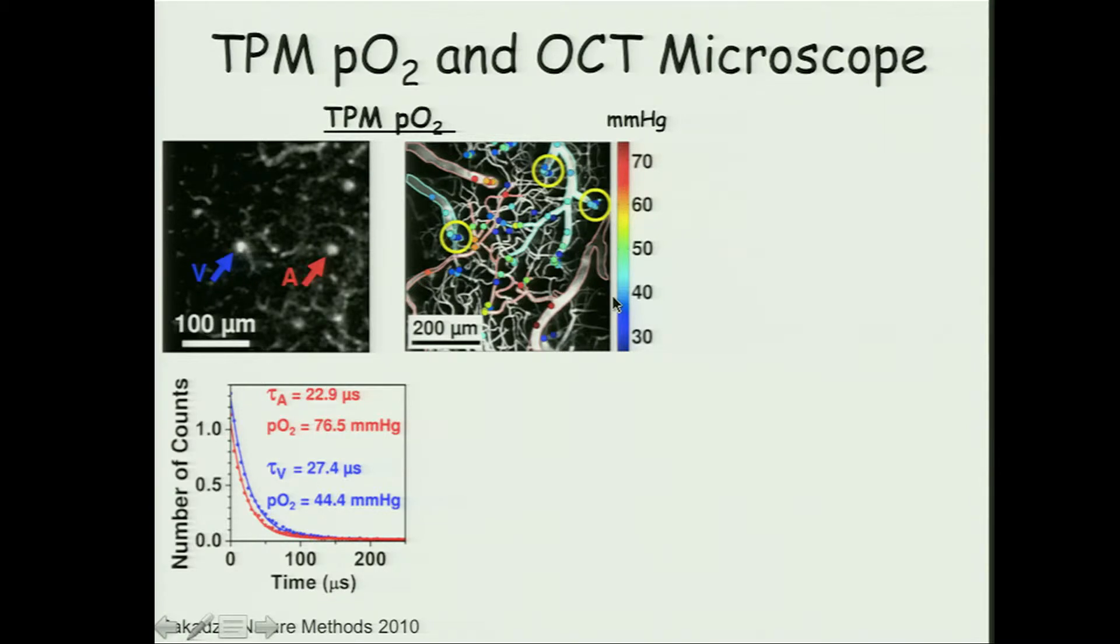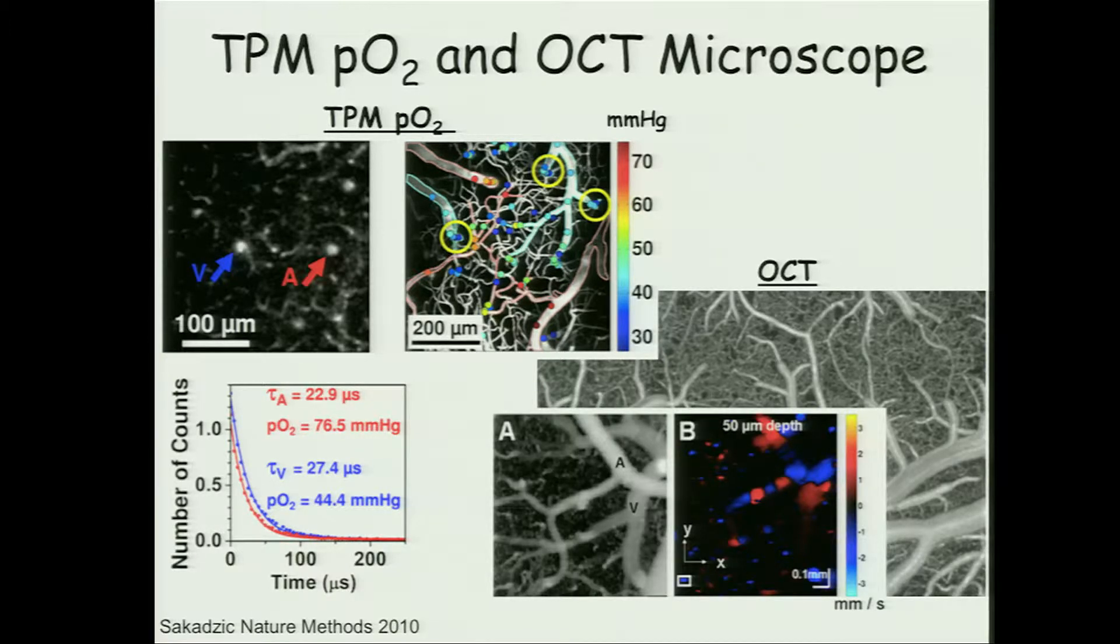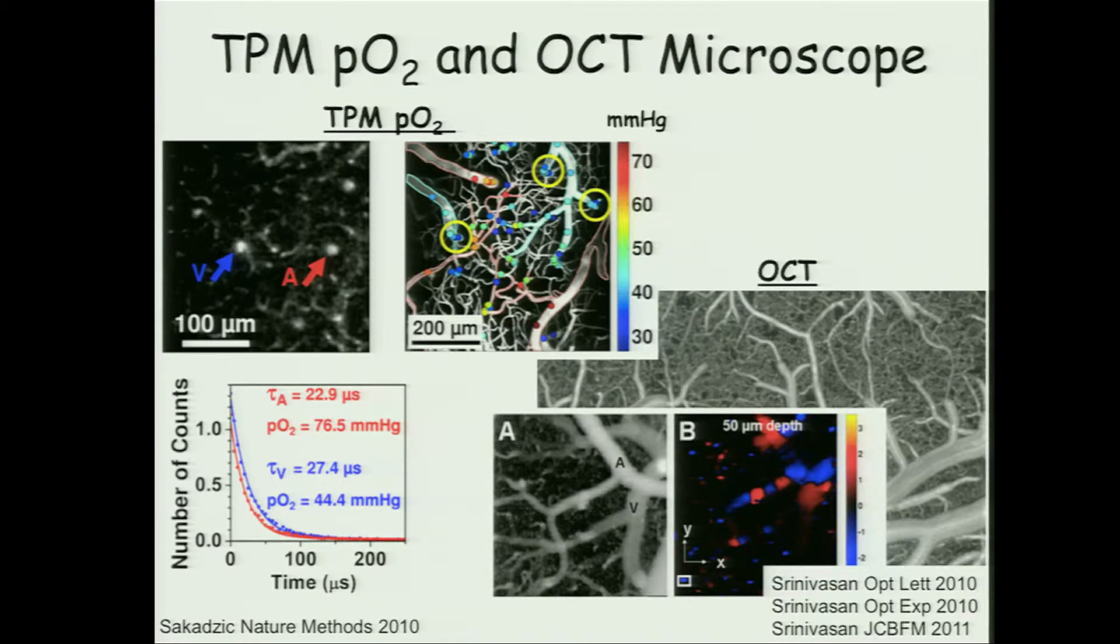Because this is two-photon microscopy, it's very easy now to raster scan around to multiple points and map oxygen throughout the vascular network. That's being coupled now with OCT. You can do an OCT angiogram, get a volumetric map of the vascular network. You can do Doppler OCT and quantify blood flow in the arteries and veins. These are representative images from Vivek Srinivasan. But what we really want to do is extend these methods to measure the flow characteristics in the capillary network.